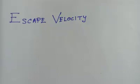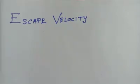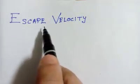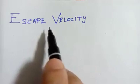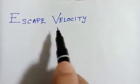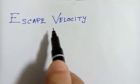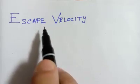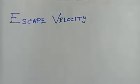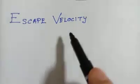In this video we would be looking at a very familiar concept in physics which is called escape velocity. The name itself indicates that something wants to escape. We can define it as the minimum velocity given to an object so that it can escape from the surface of the earth or from the earth's gravitational field — that is called escape velocity.